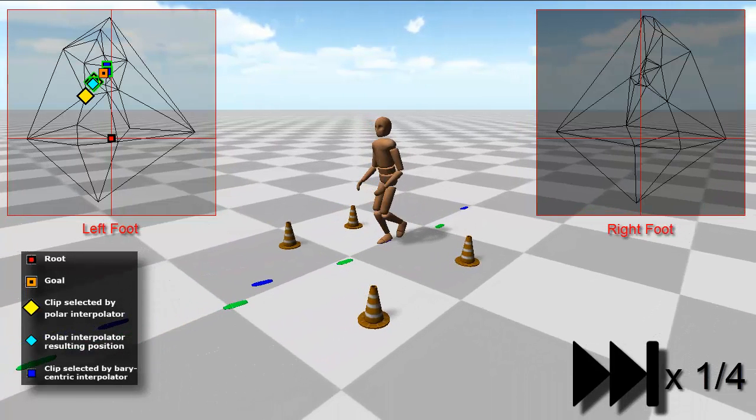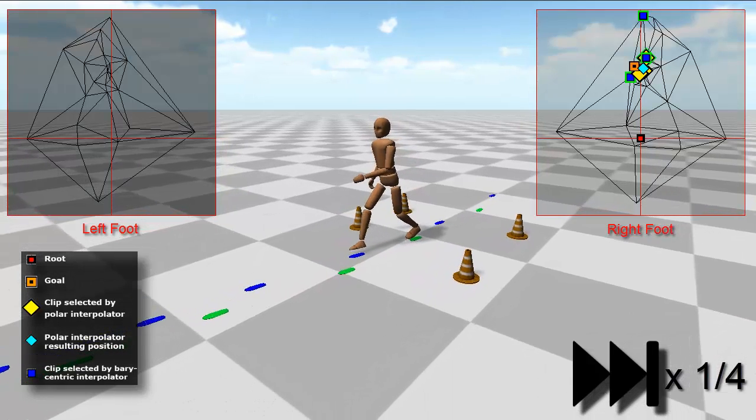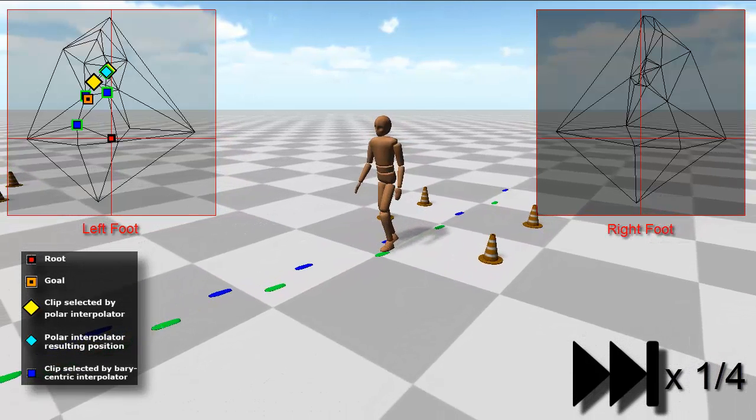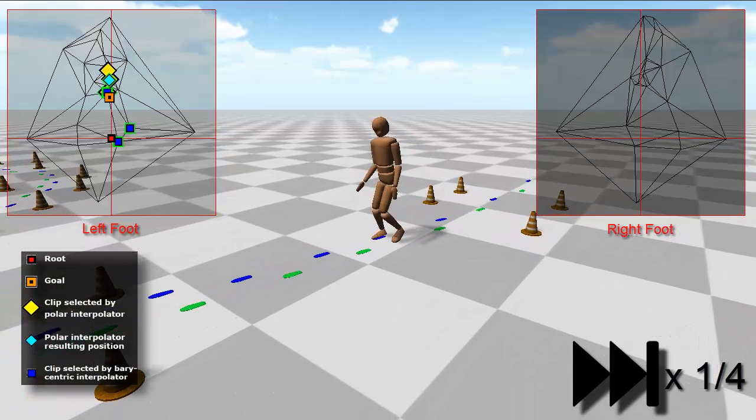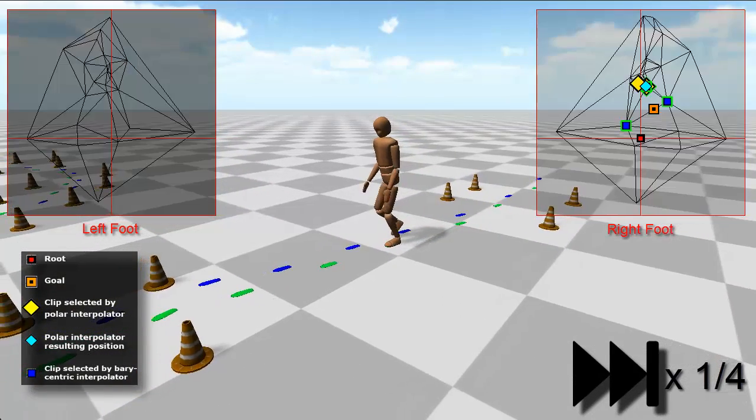In these results we can see a slow motion sequence of a character following a handmade footstep trajectory. Each foot has its own triangulation, and we switch between them as the character reaches a landing position.